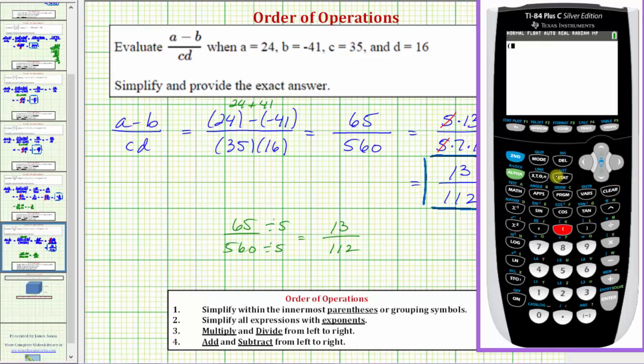So we'll start with an open parenthesis to start the numerator, and then we have 24 minus negative 41, and then a closed parenthesis to end the numerator. Divided by, open parenthesis to begin the denominator, and then we have 35 times 16. And then finally, we end the denominator with a closed parenthesis, and enter.